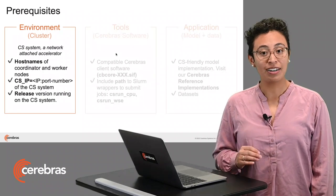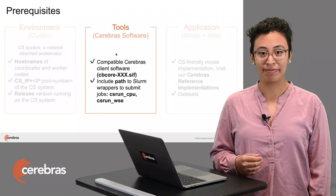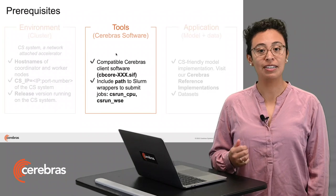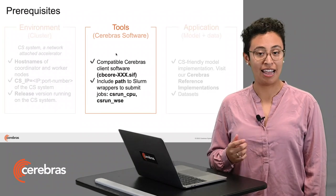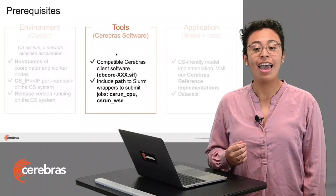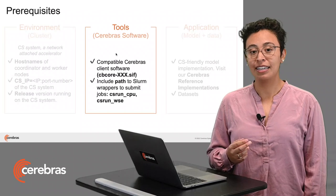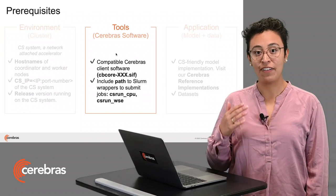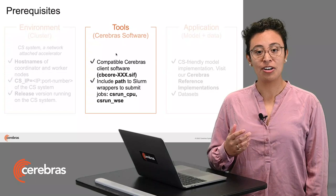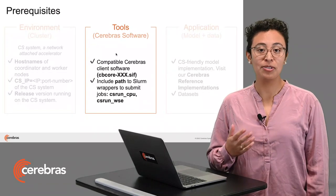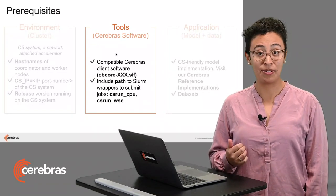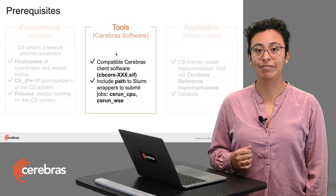The second part covers the tools — the Cerebras software. There are two types. The first is a compatible Cerebras client software, also called CP-Core. The second is that we need to include in an environment variable path the SLURM wrappers to submit jobs. These SLURM wrappers are called CS-RAN-CPU and CS-RAN-WSE.